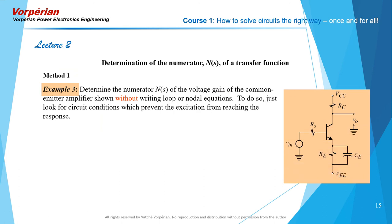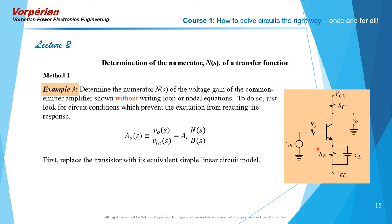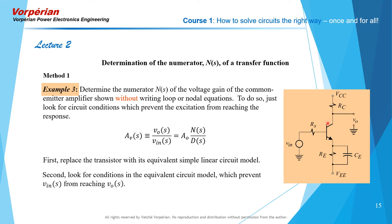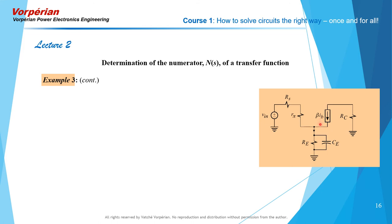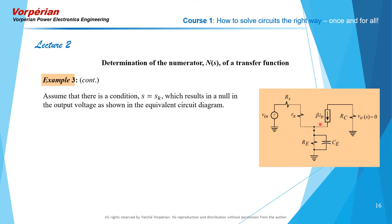In this example we're going to determine the numerator N of s of the voltage gain of the common emitter amplifier with an emitter bypass capacitor. In the previous video we determined the denominator of this transfer function and a zero. Now we're going to determine N of s by examining the transform circuit for conditions that prevent the excitation Vin of s from reaching the response V0 of s. We replace the transistor with its equivalent circuit model first. We then determine the condition that results in a null in the transform output voltage.